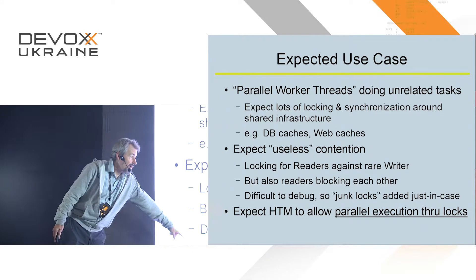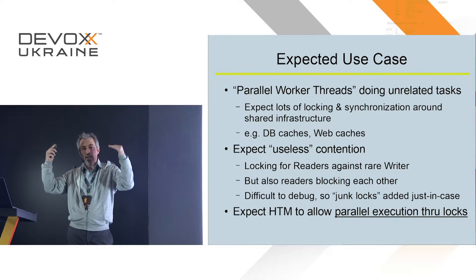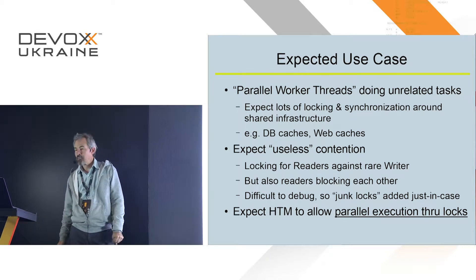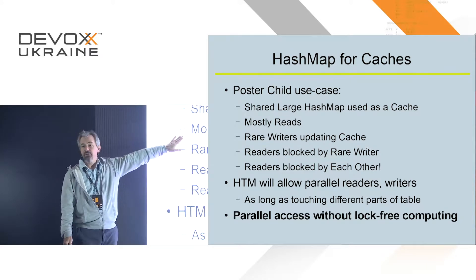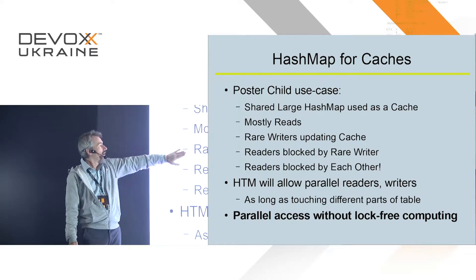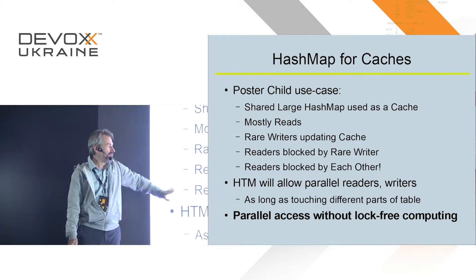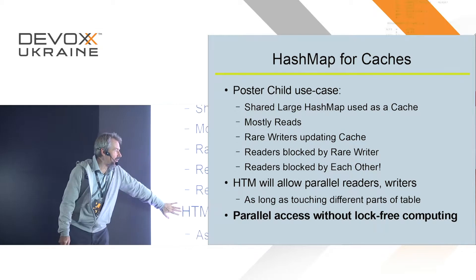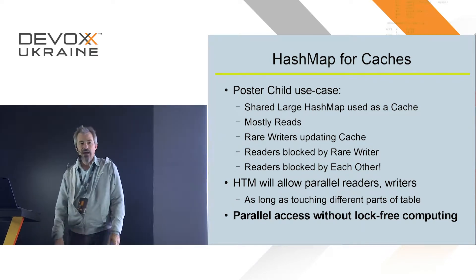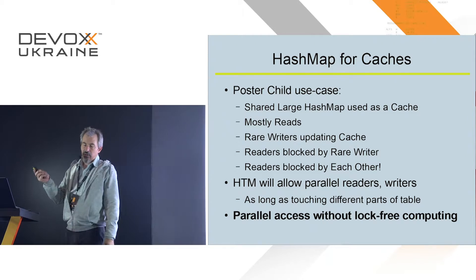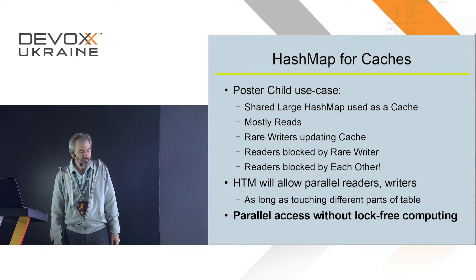So we were hoping that the hardware transactional memory would allow parallel Java execution through locks — multiple threads both holding the lock and running code at the same time, and being correct about it. The poster child case here is HashMap: a shared large HashMap as a cache, with 95–99% readers and 1% writers updating rarely. The readers are blocked by a rare writer, and the readers block each other because of the synchronized keyword. Parallel access without lock-free computing — standard everyday synchronized Java locks. The goal of the hardware was to accelerate Java locks.